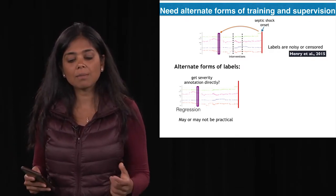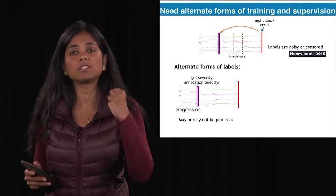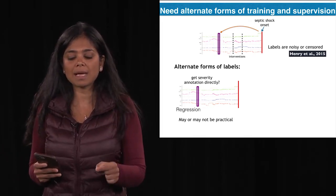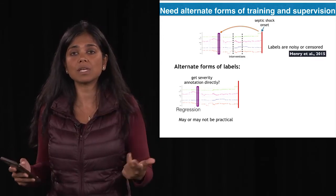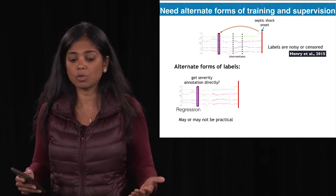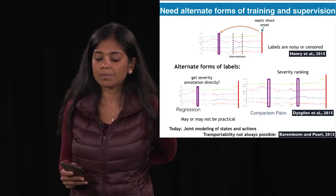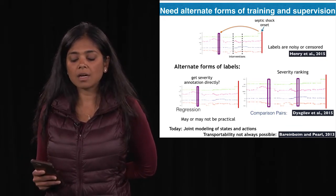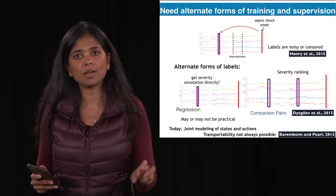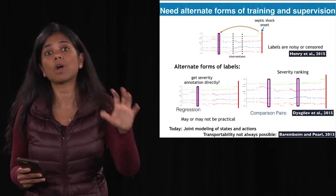One way forward is to start thinking about better ways to build models that account for these types of corruptions. Alternatively, instead of using a downstream label, you could collect a different type of supervision — getting a provider to give you a severity score at the time you're trying to score the data. But this is not scalable. Today's talk will focus on the idea of joint modeling of both marker data and action data, and bringing ideas from causal inference to do counterfactual reasoning.